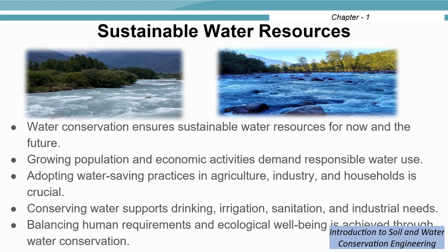By conserving water, we may ensure sustainable water resources for present and future generations. Increasing population and economic activities demand responsible water use. Agriculture is the main consumer of water, so we need to adopt water-saving practices such as micro-irrigation systems and water harvesting structures. In households, roof rainwater harvesting systems can be adopted with the first flush drained away. By conserving water, we can provide drinking water, water for irrigation, sanitation, and industrial needs, balancing human requirements and ecological well-being.